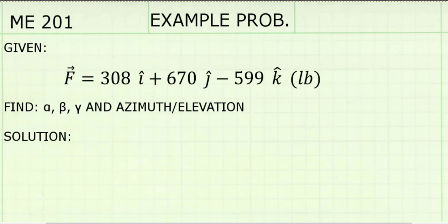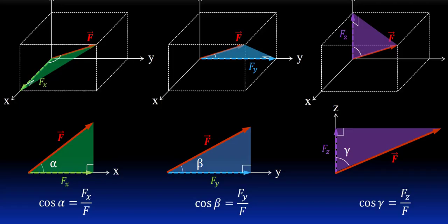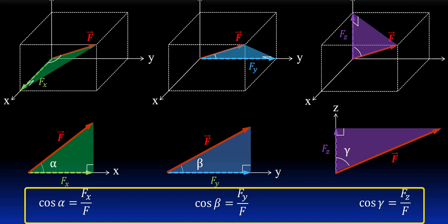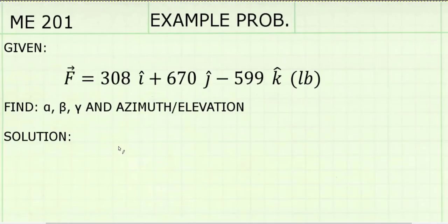Next, I'm going to find the coordinate direction angles alpha, beta, and gamma. We can use the equation shown here to find our angles. But first we need to find the resultant force.